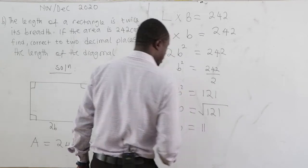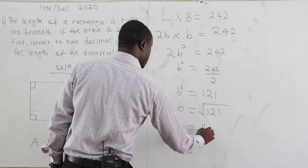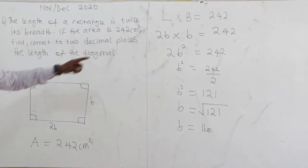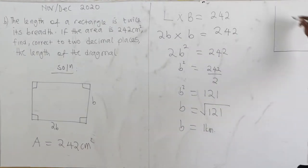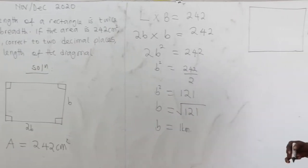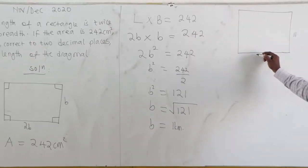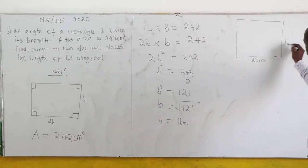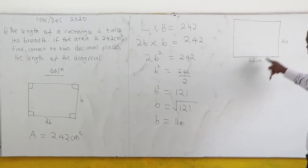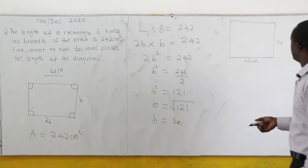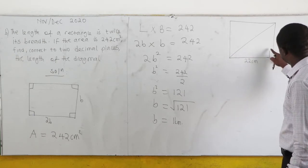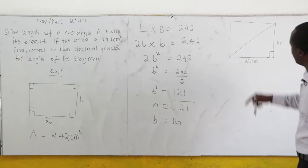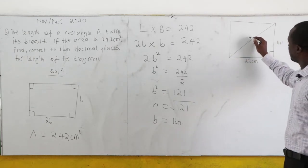So b is 11 centimetres. The breadth is 11 cm and the length is 2b, which is 2 times 11 giving us 22 centimetres. The diagonal can be either one — they are the same length. We have a right-angle triangle formed by the diagonal, so let's denote the diagonal as d.